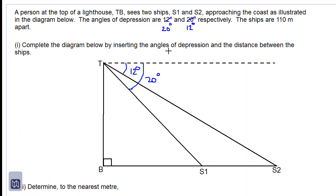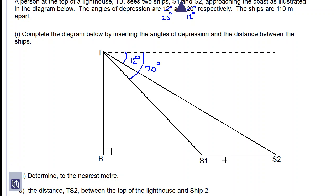So we have inserted the angles of depression and let's insert the distance between the ships which is 110 meters apart. So we write 110 meters which separates S1 and S2.